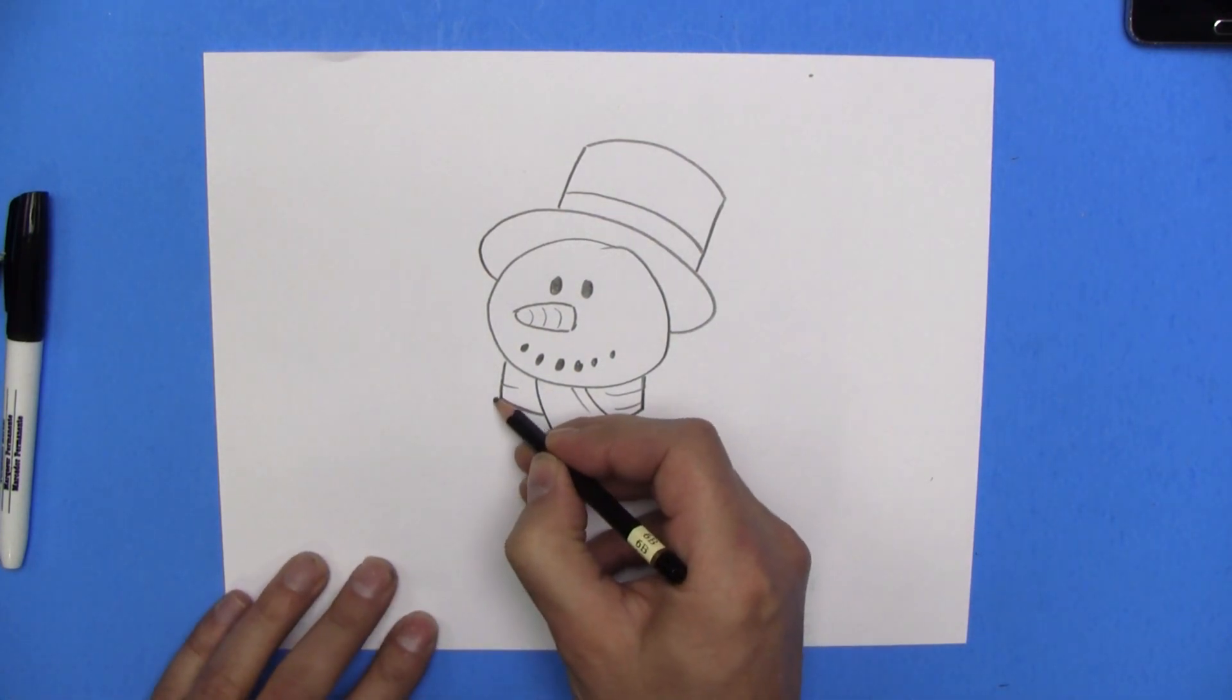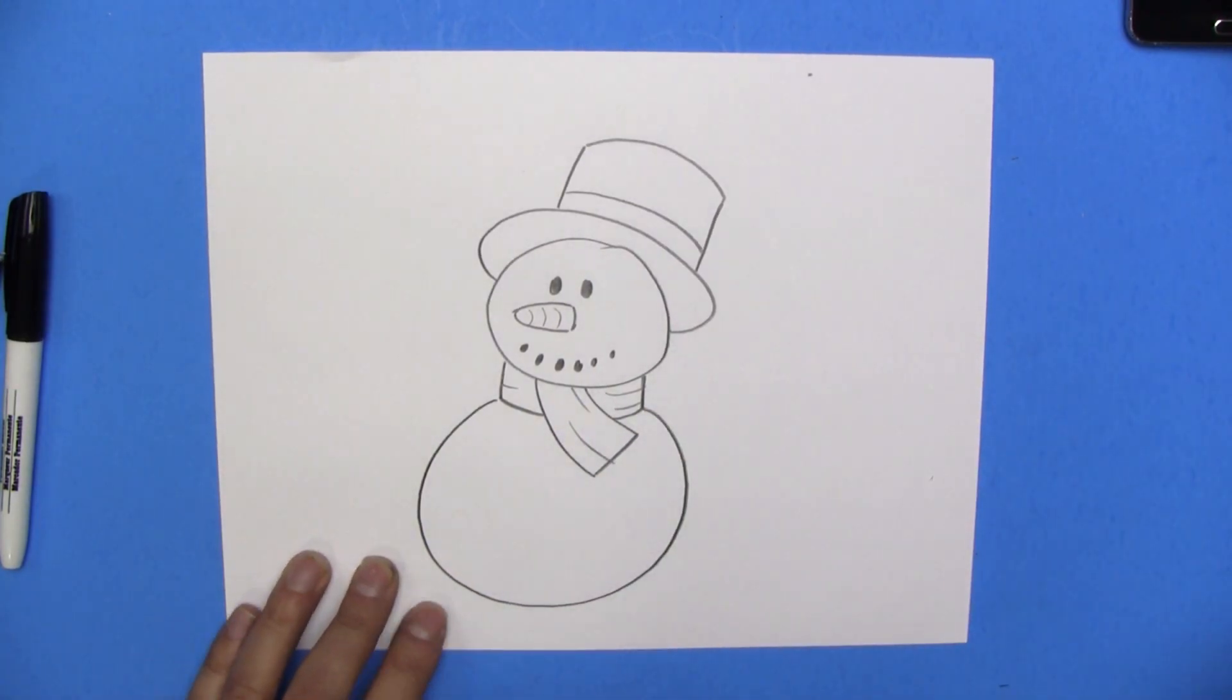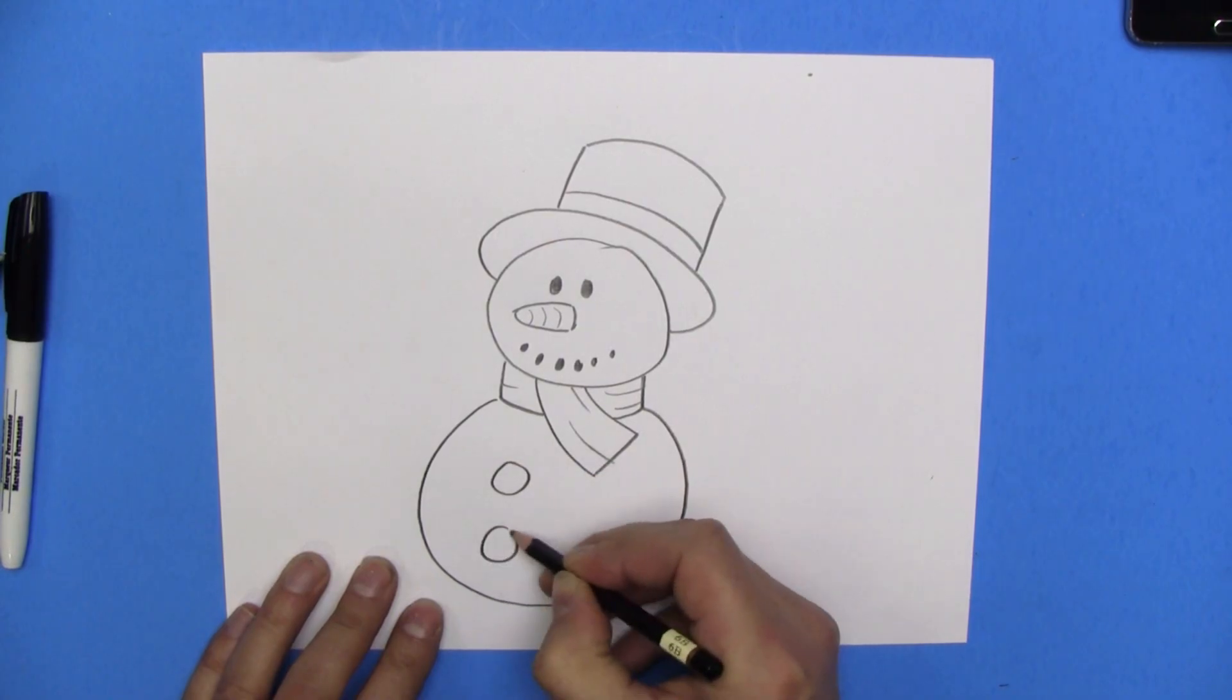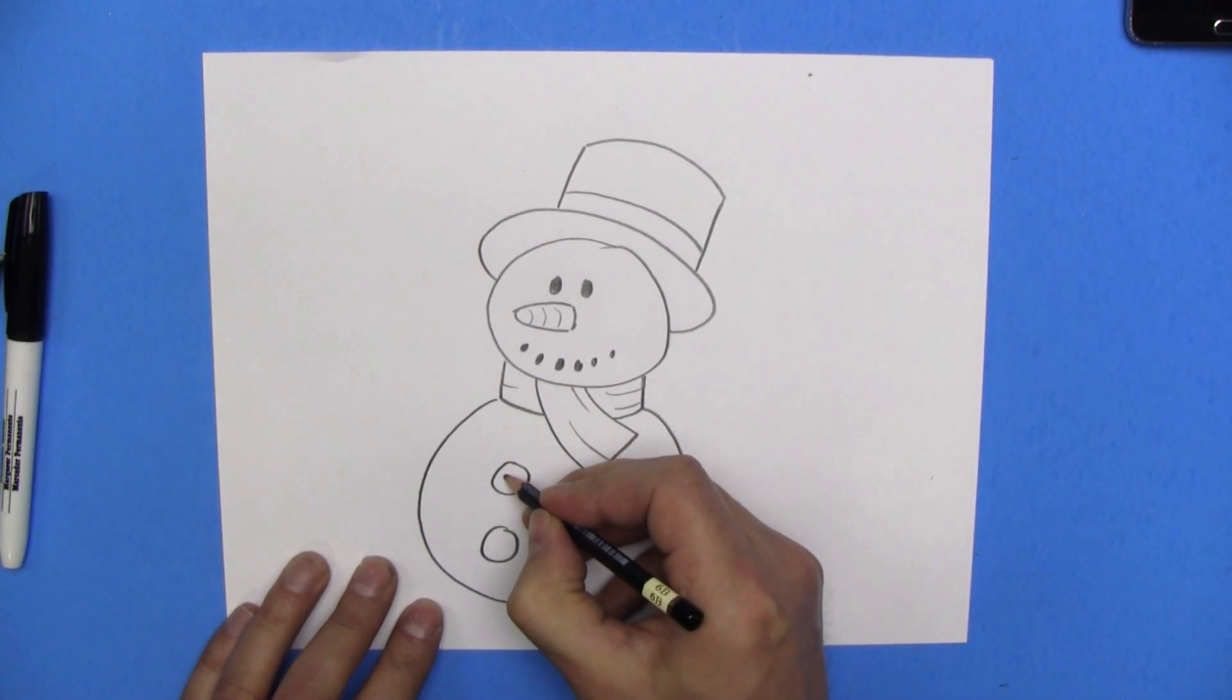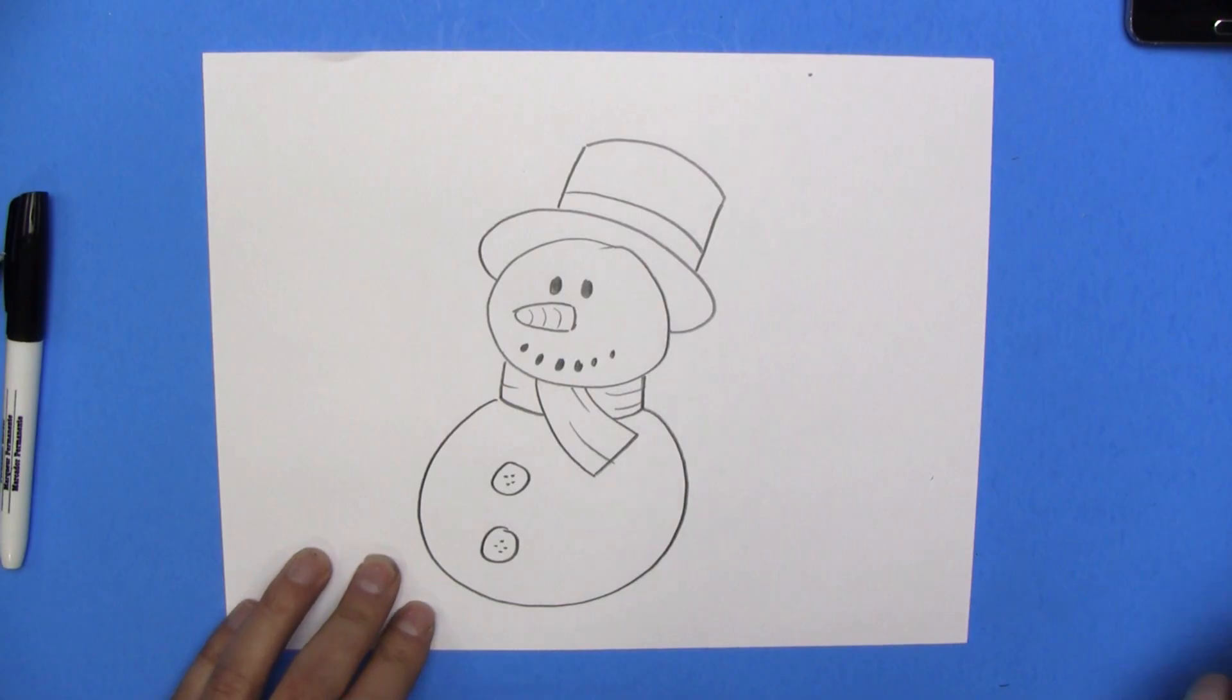Now we need his body. His body is just going to be super round. There we go. And he needs some buttons. He might have a couple buttons. I'll put actual buttons. I'll just put four little dots there. You can use buttons to make it large. Very large buttons to make your snowman.